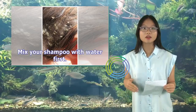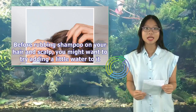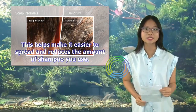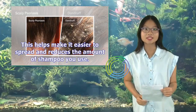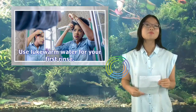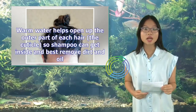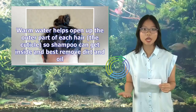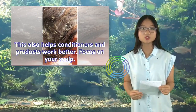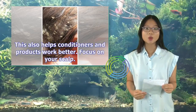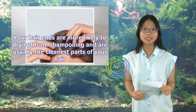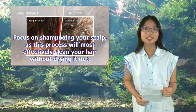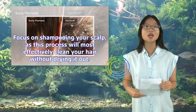Use lukewarm water for your first rinse, as warm water helps open up the outer part of each hair — the cuticle — so shampoo can best remove dirt and oil, and also helps conditioners and products work better. Focus on your scalp when shampooing, since your hair ends are more likely to dry out and are usually the cleanest parts. Shampooing your scalp is the most effective way to clean your hair without drying it out.